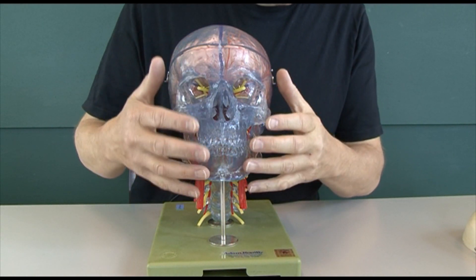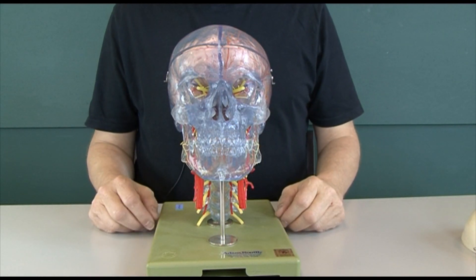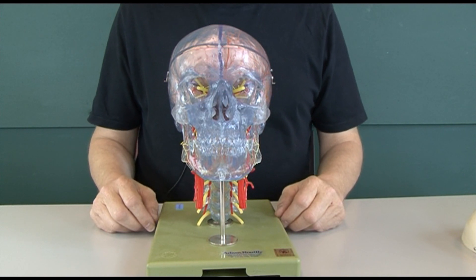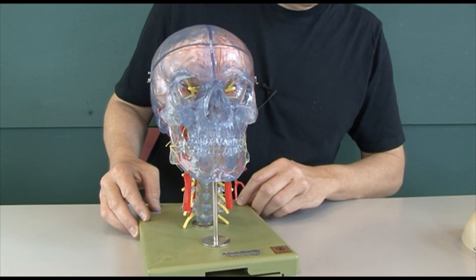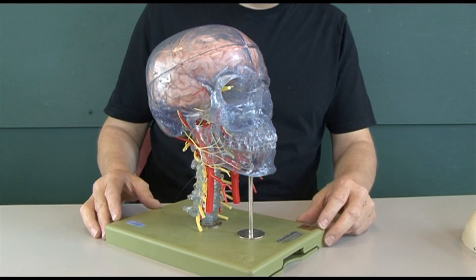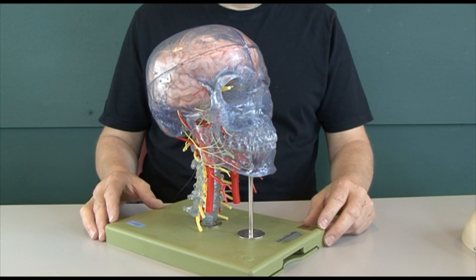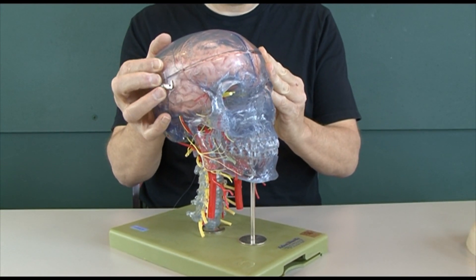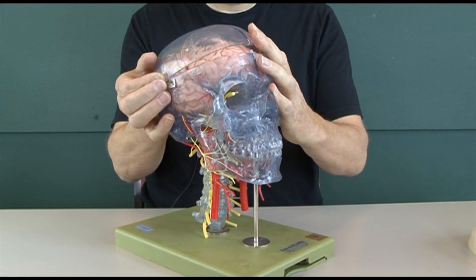Here we have a model of the whole skull to show the relationship between the skull and the brain. We can see the various bones of the skull, and conveniently the top of this skull has been cut off for us so we can take out the lid of the skull.